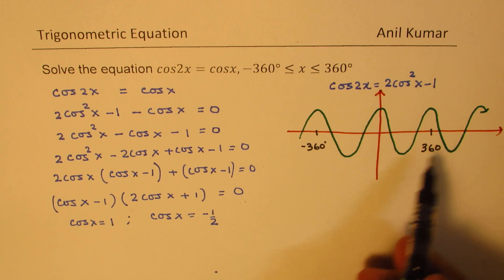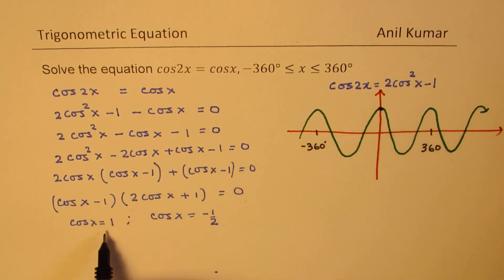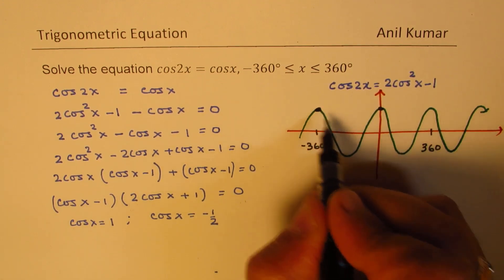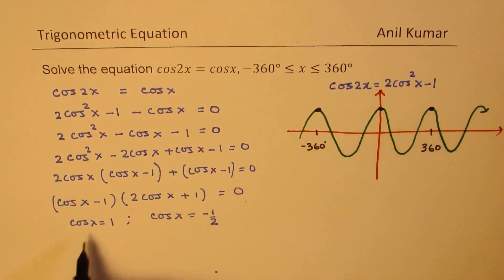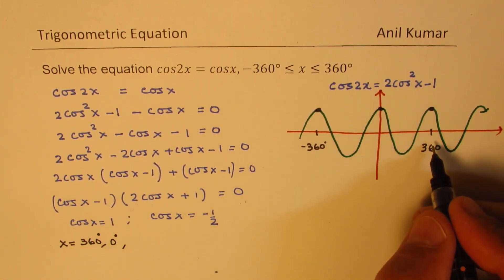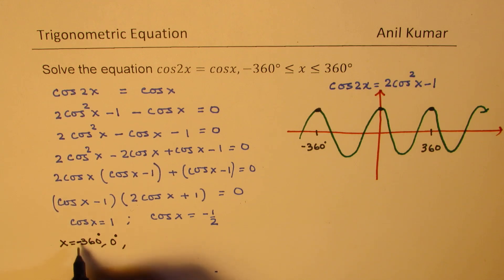Now in this domain, we are looking for values which are 1. So clearly for cos x equals 1, we have 3 values. So that gives you x equals 360 degrees, 0 degrees and plus 360 degrees.